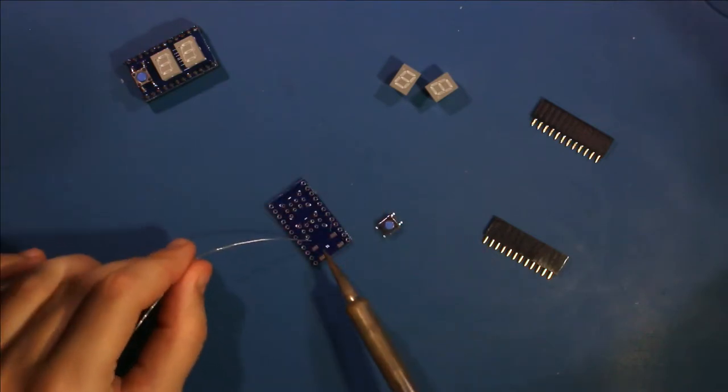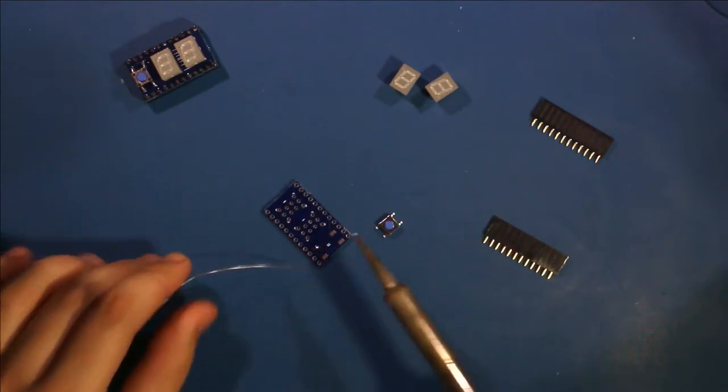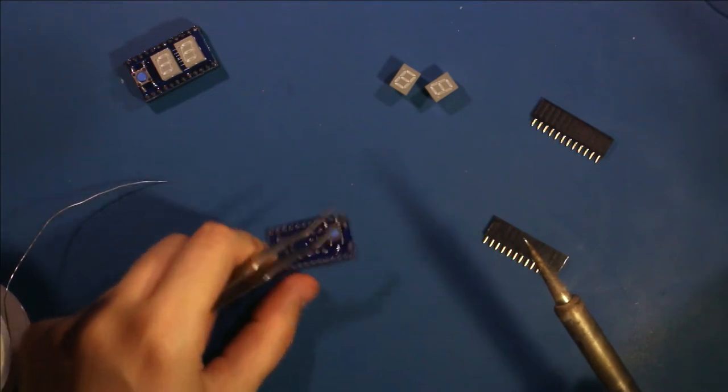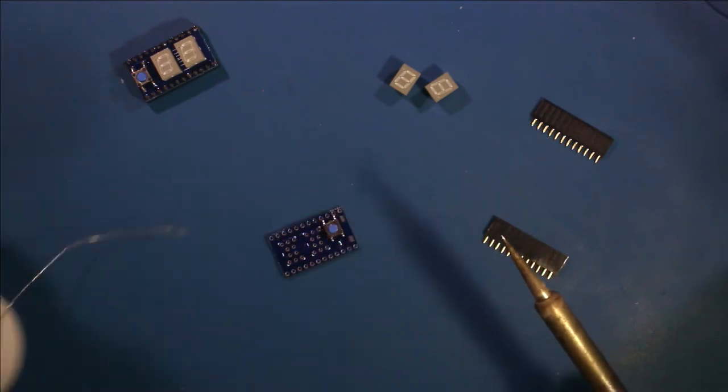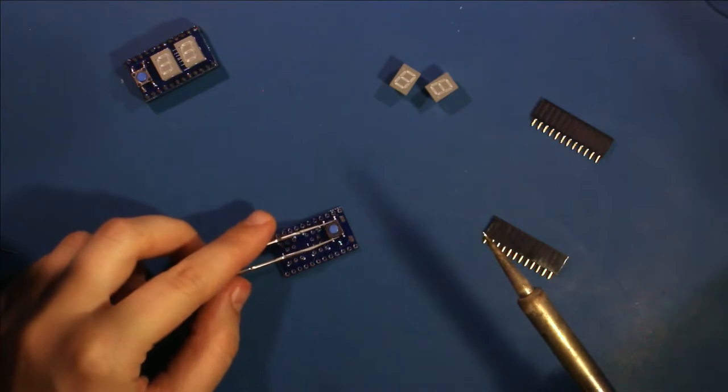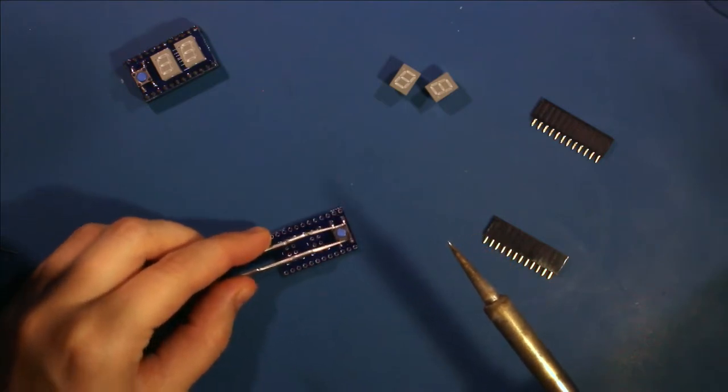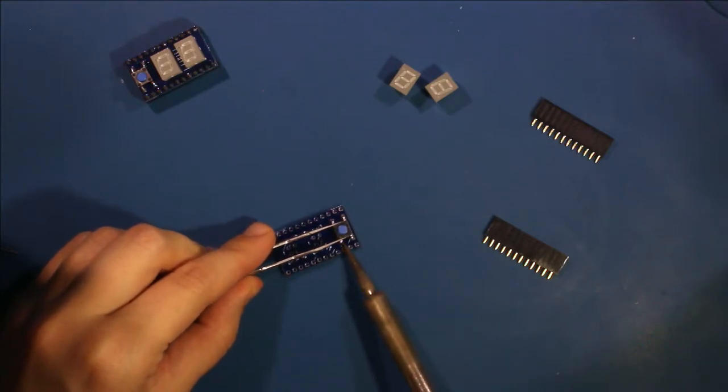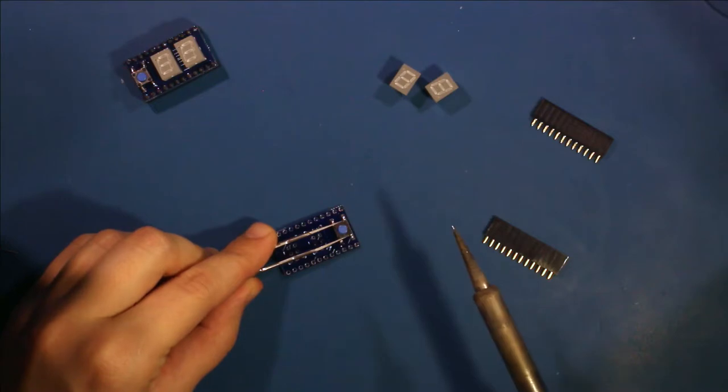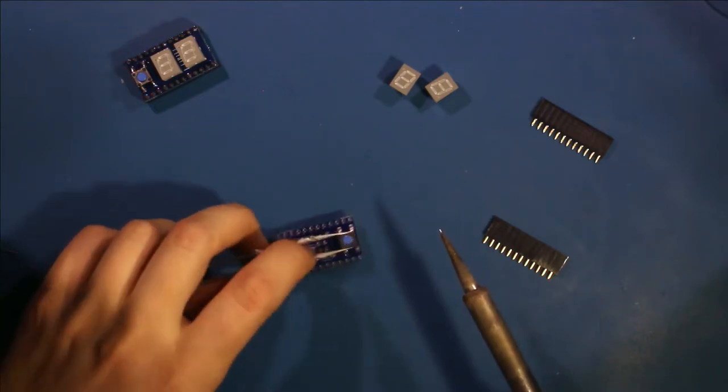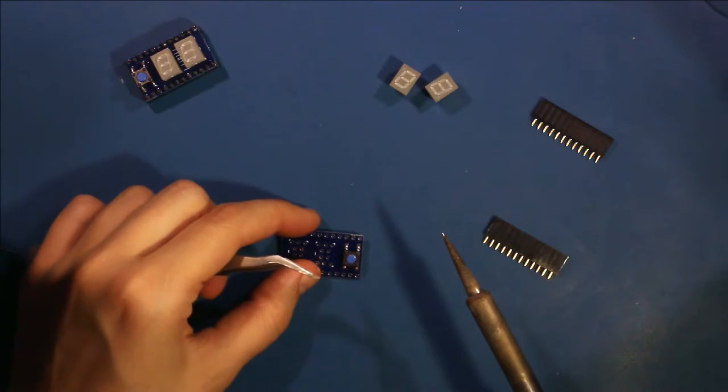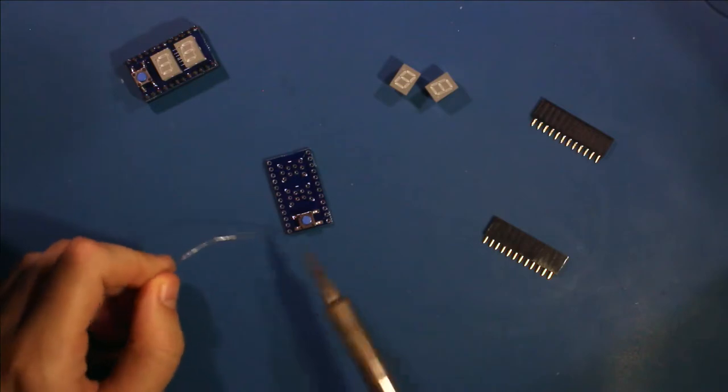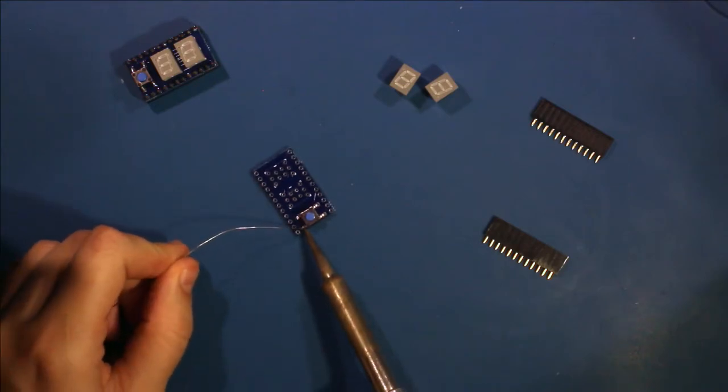So first, I tin up one of the pads just like the resistor. Using the tweezers, I hold it and remelt the solder to attach it. And then I check to make sure that the component is centered nicely. And then solder the remaining pads.